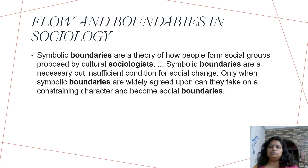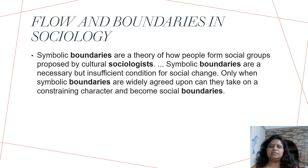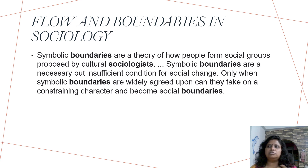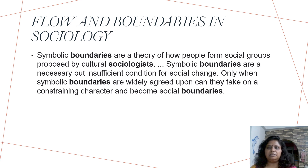What is the flow and boundaries in sociology? Symbolic boundaries are the distinctions people draw from social groups. Symbolic boundaries are a necessary condition for social change; only when symbolic boundaries are agreed upon and take on a consistent character do they become social boundaries. Every social group has a boundary — for example, family has a boundary. We behave differently at home than when we go to other groups; we don't carry the same attitude to other settings.